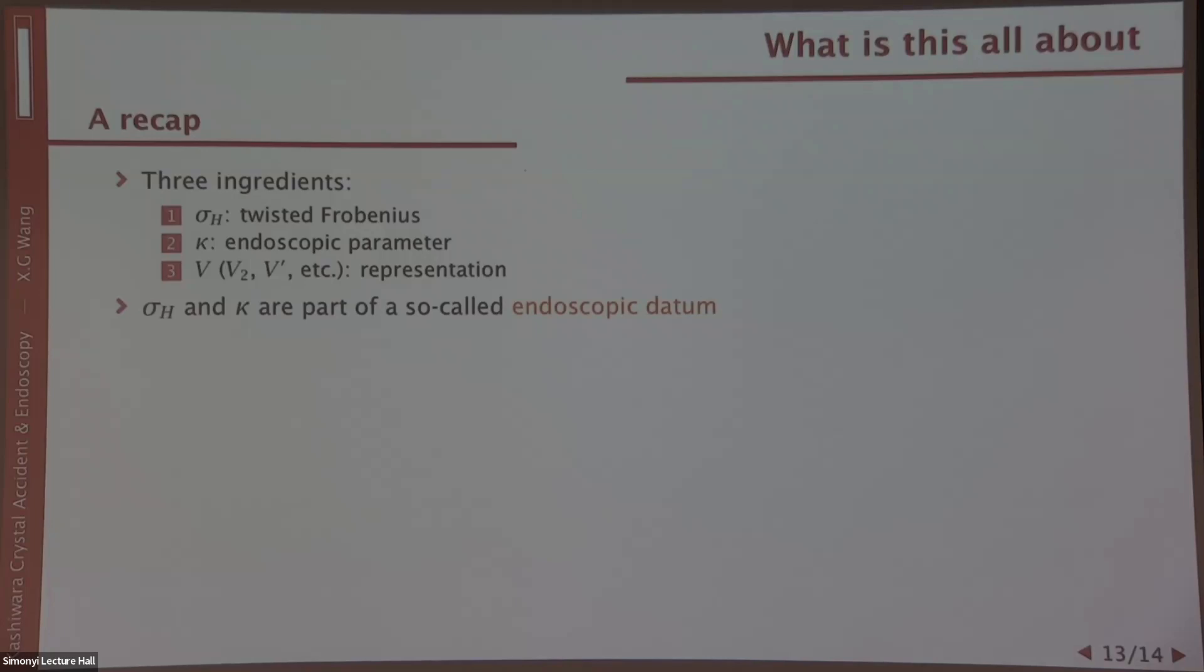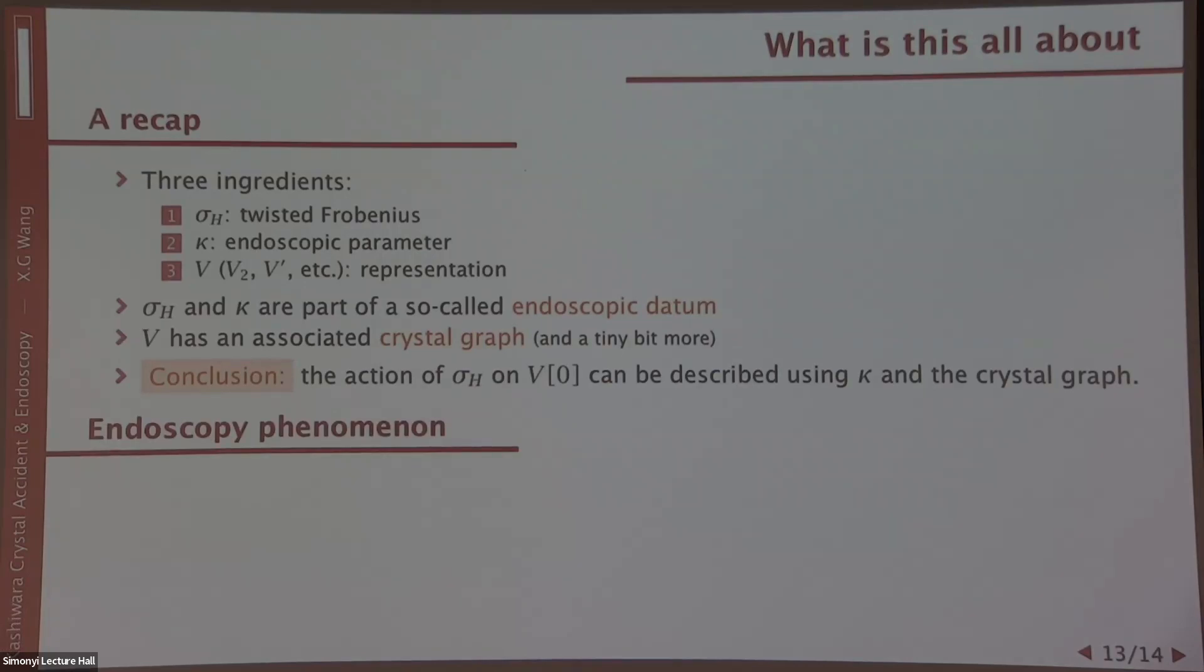Sigma h and kappa are part of the so-called endoscopic datum. For representation V or V prime, there is an associated crystal graph. The conclusion is that we can use kappa and the crystal graph to recover the action of sigma h on V bracket zero.